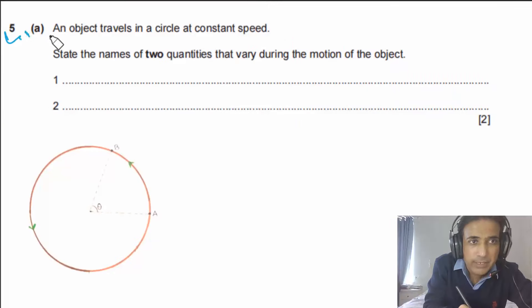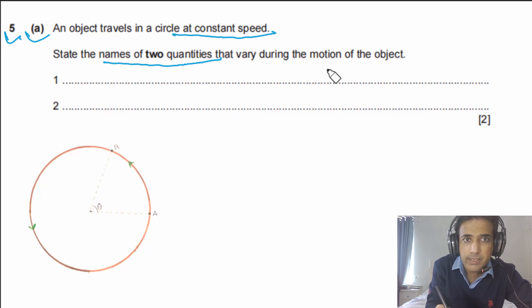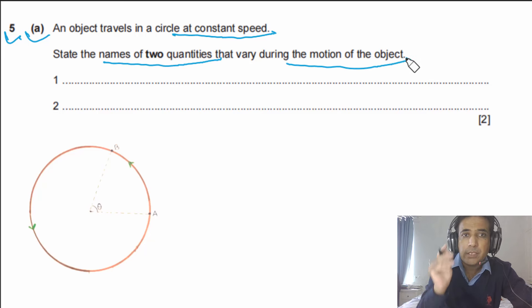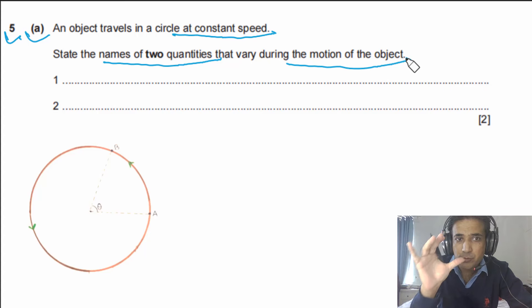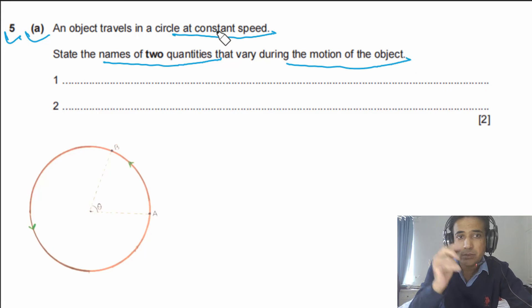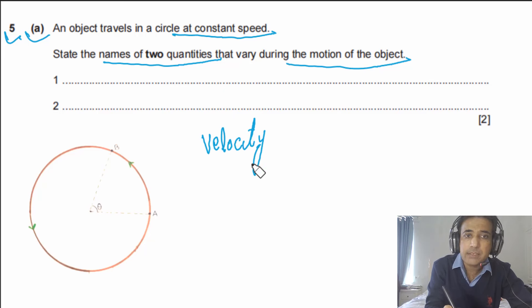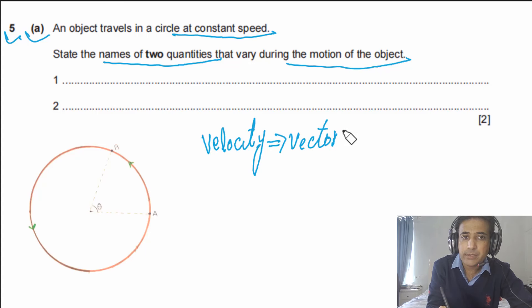Question 5 part (a) says: an object travels in a circle at constant speed — state the names of two quantities that vary during the motion of the object. In this case, speed is constant.